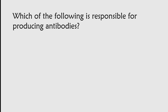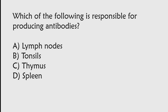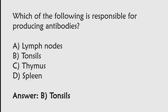Which of the following is responsible for producing antibodies? Options: Lymph nodes, Tonsils, Thymus, Spleen. The correct answer is Option B. Tonsils are responsible for producing antibodies.